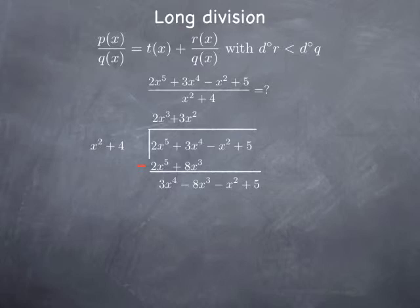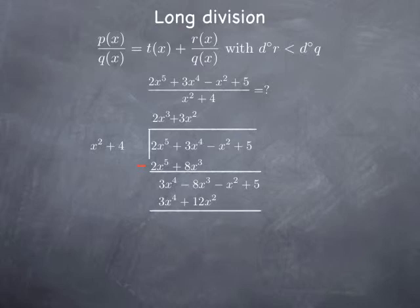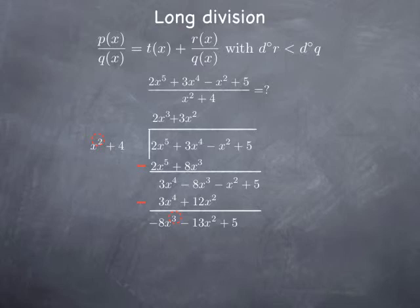We multiply 3x squared by x squared plus 4 and write the result underneath, then subtract from 3x to the fourth minus 8x cubed minus x squared plus 5. The x to the fourth terms cancel, negative 8x cubed remains, and negative x squared minus 12x squared gives negative 13x squared, and 5 remains. We check degrees again — still not less than the divisor — so we iterate again.